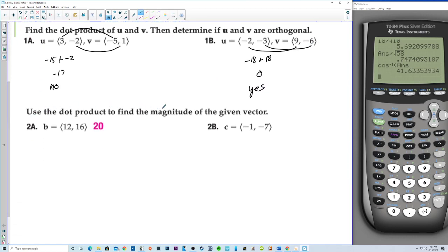Use the dot product to find the magnitude of the given vector. The magnitude of b squared is b dot b. So let's get b dot b. We have 144 plus, I don't know what 16 squared is, 256. So the magnitude squared is 400. Square root both sides. The magnitude of b is equal to 20.